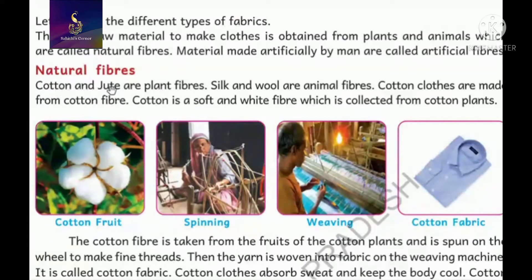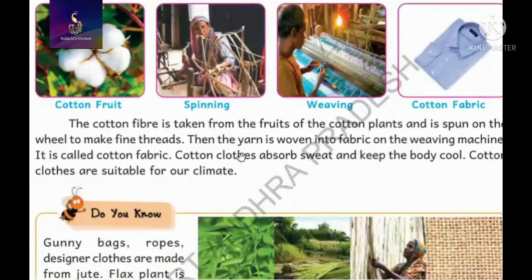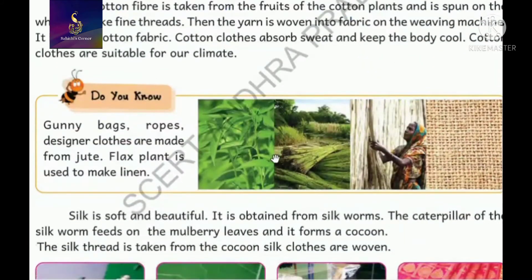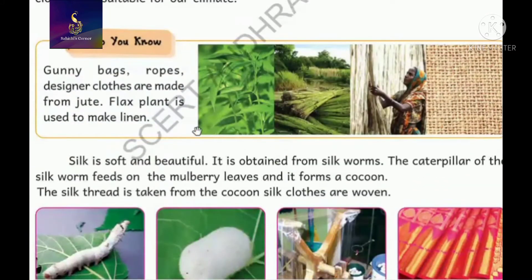Our clothes are made by threads, and the threads are made by various types of fibers. We have two types of fibers: natural fibers and artificial fibers. Natural fibers come from plants and animals; artificial fibers come from chemicals. Cotton comes from the cotton fruit - by spinning and weaving it, a cotton shirt is made. Cotton gives cool to our body, so we wear cotton dresses in summer. Gunny bags, ropes, and designer cloths are made from jute.